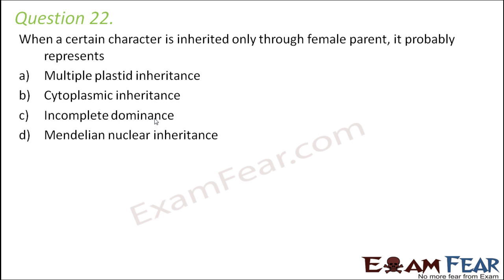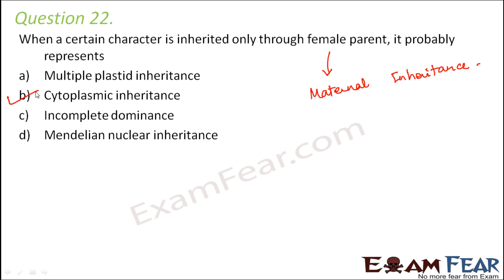Question number 22: When a certain character is inherited only through the female parent, it probably represents multiple blasted inheritance, cytoplasmic inheritance, incomplete dominance, or Mendelian nuclear inheritance. Anything which gets inherited only through the female parent is termed maternal inheritance, and maternal inheritance has another synonym — cytoplasmic inheritance.